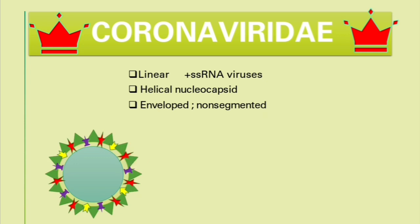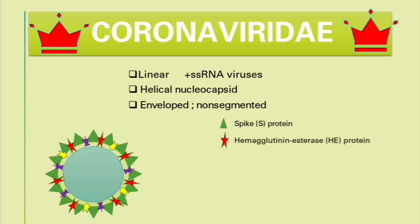Let me explore the proteins found on this envelope. The green proteins are called spike proteins or S protein. The red one is called hemagglutinin esterase or HE protein. The purple one is called envelope protein or E protein. And the yellow protein is called matrix protein or M protein.